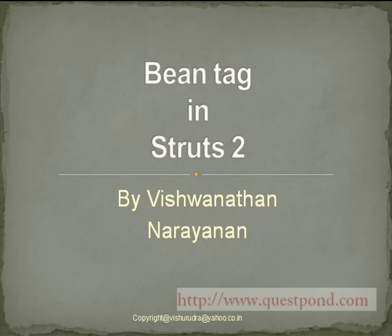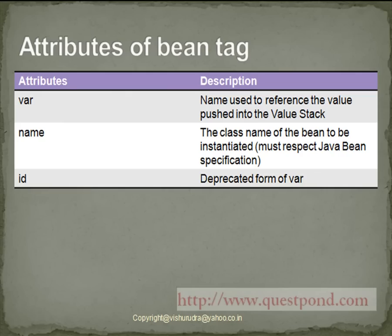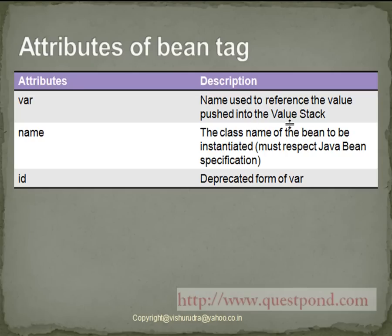Let's understand the s:bean tag, which is used to instantiate a class in JSP. By using the bean tag we can create an object of a particular class within JSP. The various attributes of the bean tag include: 'var', which allows us to refer to the bean pushed in the value stack; 'name', which refers to the class whose bean is to be created in the JSP — the bean must respect Java Bean specifications; and 'id', which is a deprecated form used to reference the value pushed in the value stack.